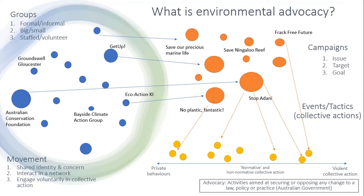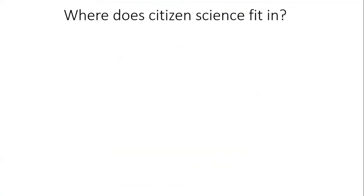These actions can range from private pro-environmental behaviours down here on the scale — things like recycling or planting a tree — up to civil resistance at the other end, like blockades and sit-ins, and in some social movements this action can also involve violence. In the middle we have what could be called advocacy. In my research I use the Australian charity and not-for-profit definition of advocacy: activities aimed at securing or opposing any change to a law, policy or practice. These can include writing to a politician, attending a rally, or gluing yourself to a road.